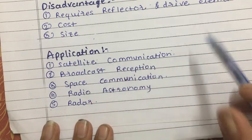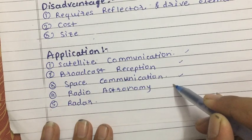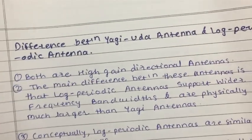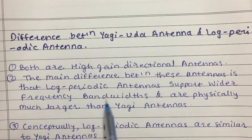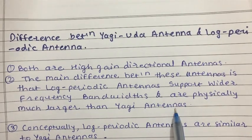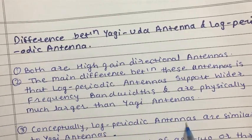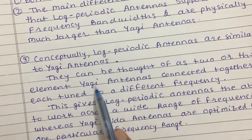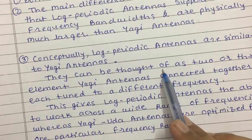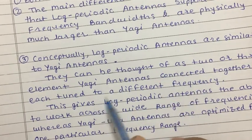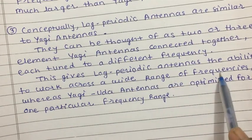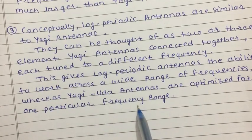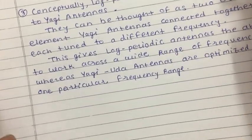Applications of parabolic reflector antenna include satellite communication, broadcast reception, space communication, radio astronomy, and radar. Comparing Yagi-Uda and log periodic antennas: both are high gain directional antennas. The main difference is that log periodic antenna supports wider frequency bandwidths and is physically much larger. Log periodic antennas are similar to two or three Yagi-Uda elements connected together, each tuned to a different frequency, giving it the ability to work across a wide range of frequencies, whereas Yagi-Uda is optimized for one particular frequency range.